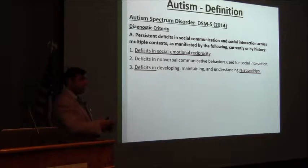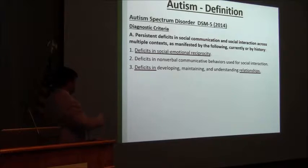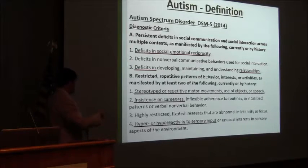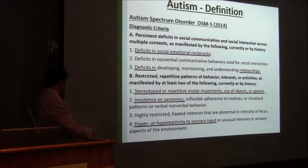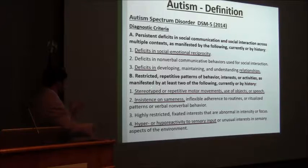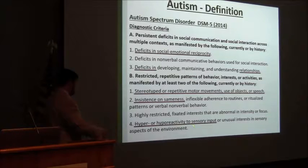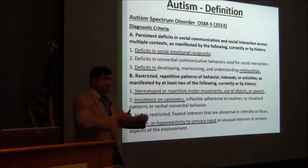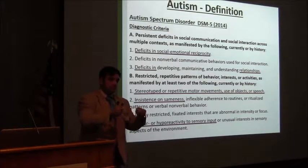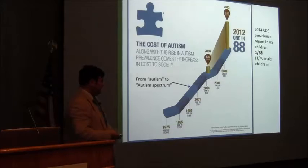In the last edition, we can see that some of the original features are still there: social relationships, insistence on sameness, stereotypical movements, and hyper- or hyporeactivity to sensory input. So we're still trying to figure out what autism is.